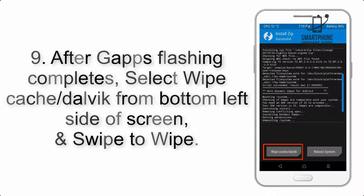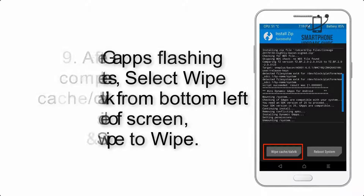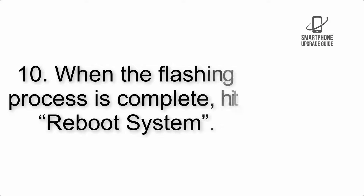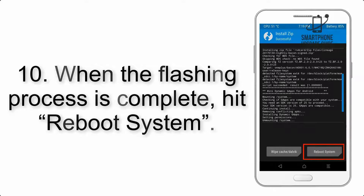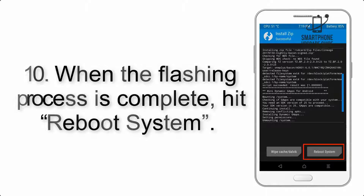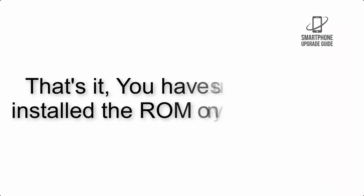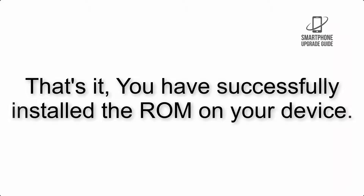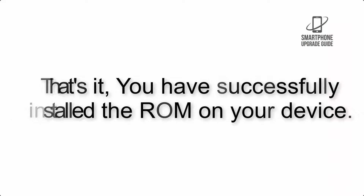Step 8: Flash the GApps zip package in the same manner. Step 9: After GApps flashing completes, select Wipe Cache and Dalvik from the bottom left side of the screen and swipe to wipe. Step 10: When the flashing process is complete, hit Reboot System. That's it — you have successfully installed the ROM on your device.